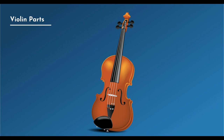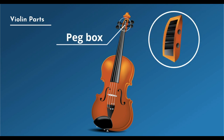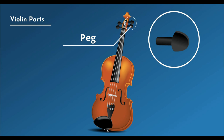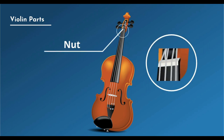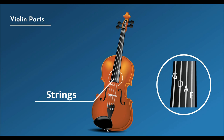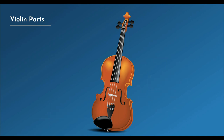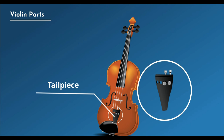It's time to start from scratch. Here are the component elements of the violin: scroll, peg box, peg, neck, nut, fingerboard, strings, F-hole, bridge, chin rest, E-tuner, tailpiece, and button.